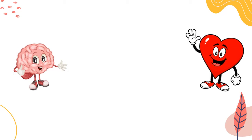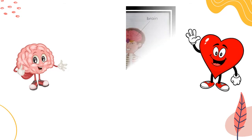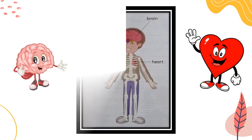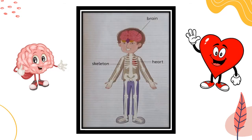Blood contains oxygen. Next is the skeleton. The skeleton is like a frame — it holds our body shape. Muscles help to move the body.